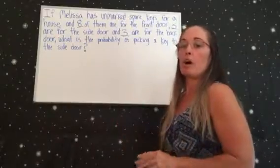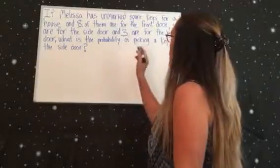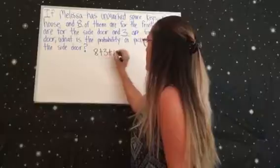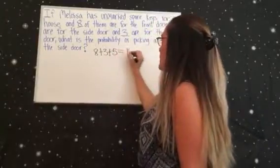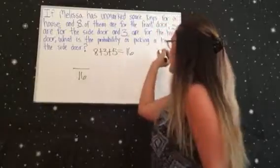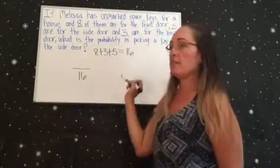You want to add up all the numbers together to find the bottom of a fraction you're going to make. We have an 8, 3, and a 5. That equals 16. And then they're asking for the keys to the side door, so there are 5 to the side door.